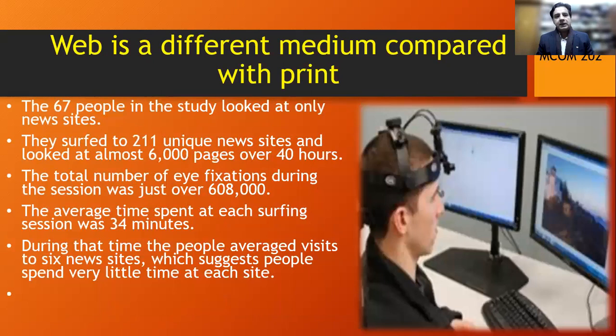67 people in the study looked at only news sites. They surfed to 211 unique news sites and looked at almost 6,000 pages over 40 hours — that's a huge number. The total number of eye fixations during these sessions was just over 608,000 fixations. The average time spent at each surfing session was 34 minutes, and people averaged visits to six news sites, suggesting people spend very little time at each site.